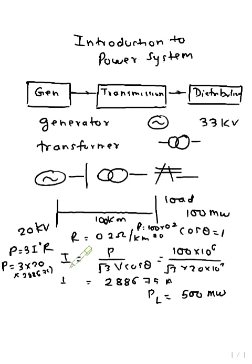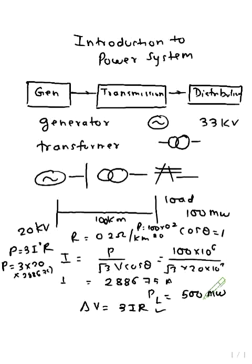Without using a transformer, we see very high power loss and very high voltage drop. The power loss is greater than the generated power. That is why high voltage transmission is required — at high transmission voltage, losses are less. This is why all power systems always use high transmission voltage.